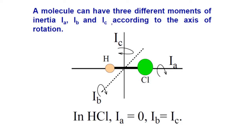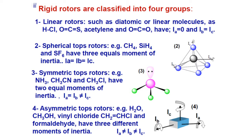Consider the HCl molecule. This molecule can have three different moments of inertia in three directions: I_A along the bond axis (the Z axis), I_B along the Y axis, and I_C along the third axis. For any molecule we have three moment of inertia components, and depending on the relations between them, molecules are categorized into various classes. For the HCl molecule, I_A equals zero and I_B equals I_C. Depending on these relations, rigid rotors are classified into four groups.